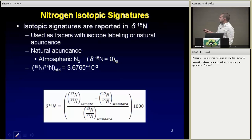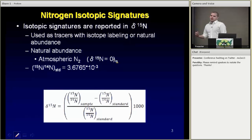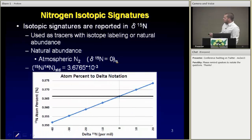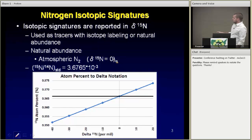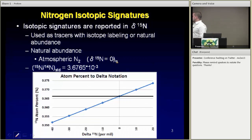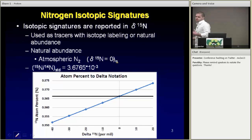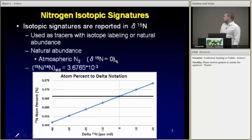Atmospheric N₂ is our natural pool. We give that the denotation delta-15N of zero, and that's how we talk about isotopes — always in delta-15N. Basically we take the atom percent to calculate delta-15N, and later you'll see how we convert atom percent into delta-15N. So zero is our standard. Anytime something is like negative 10 or negative 20, that means it has less of the rare isotope, and positive values mean more N-15 than nitrogen in the atmosphere. A rule of thumb: plus or minus 10 to 20 is about a one percent relative change from that natural occurrence of N-15.